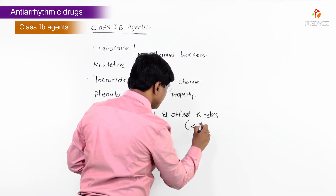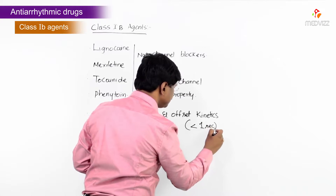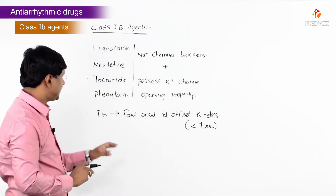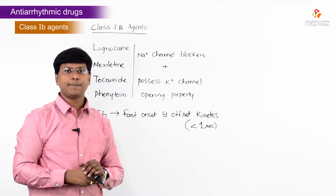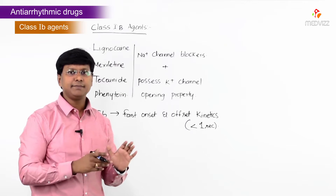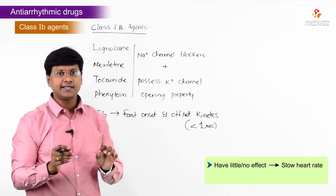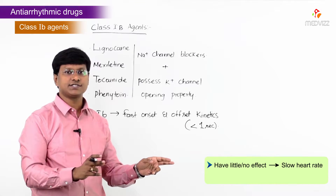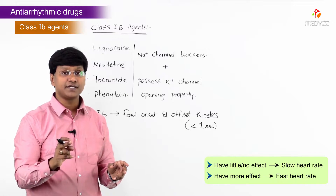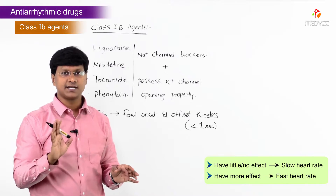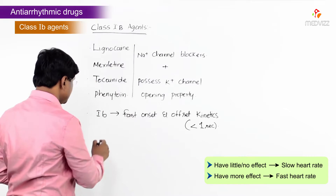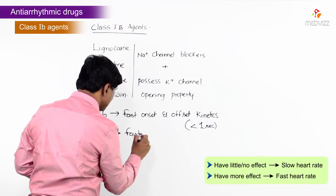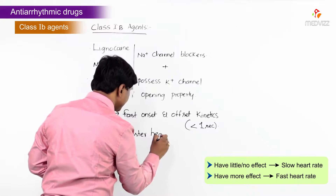The fast onset and offset kinetics is less than one second. This means these agents have little or no effect on slow heart rates, and they have more effect on faster heart rates. Class 1b agents are effective on faster heart rates.